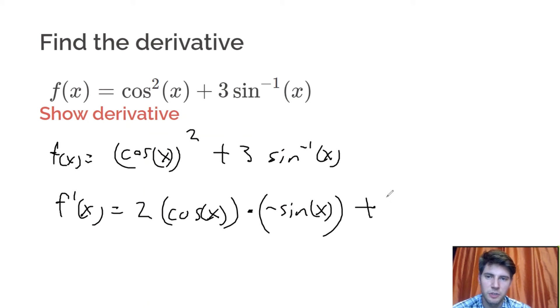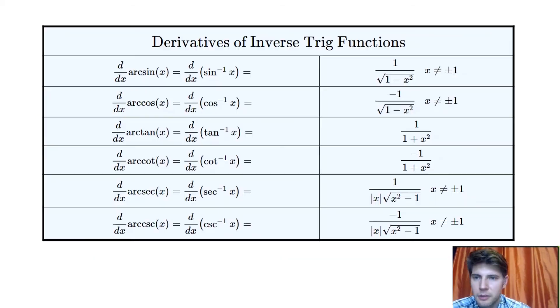now this 3 is a constant, so we're just going to leave it there. And now the derivative of sine inverse of x. Sine inverse is up here on top, and it says it's 1 over root 1 minus x squared. So we're going to use that to do the derivative of sine inverse.